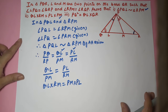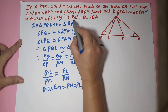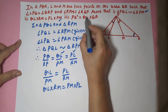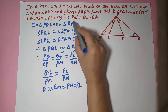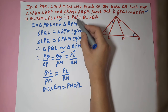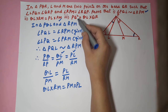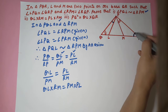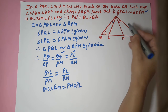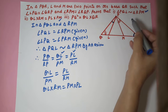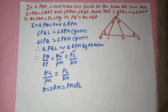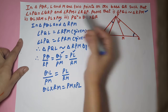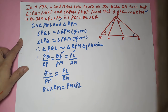Now the third part. We have to prove PQ² = QL × QR. When you see PQ², it means we need to take two triangles where PQ exists in both. So we have to choose two triangles, make them similar, with PQ appearing as a side in both triangles.